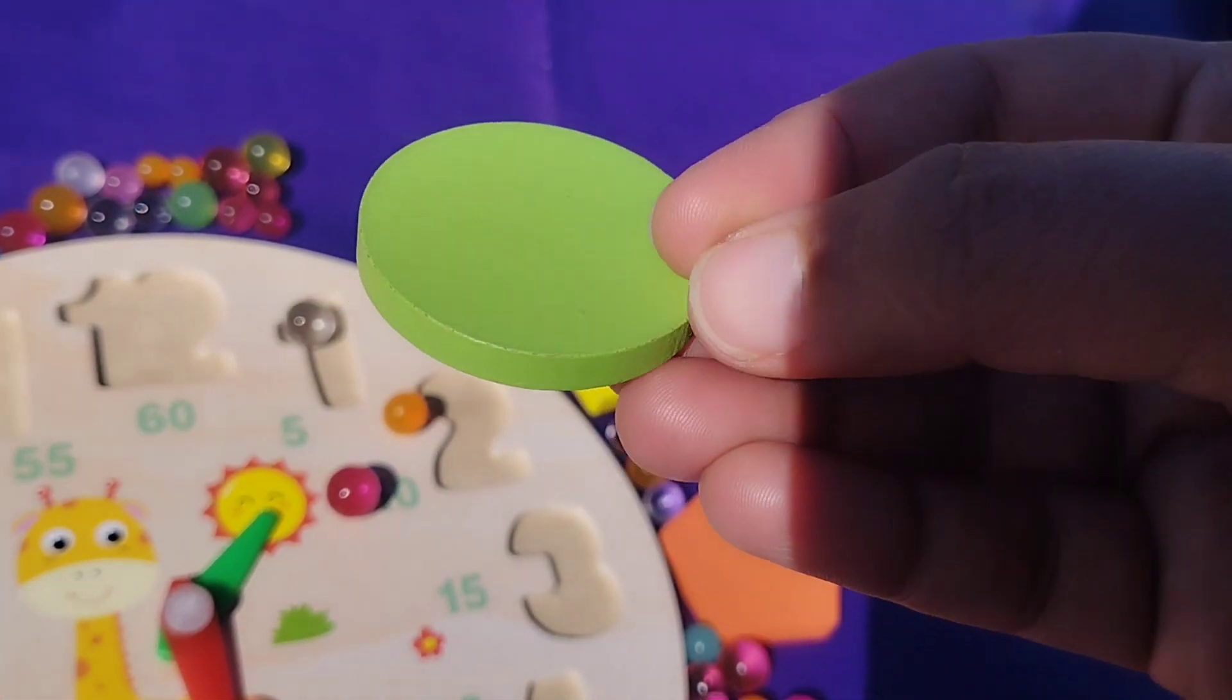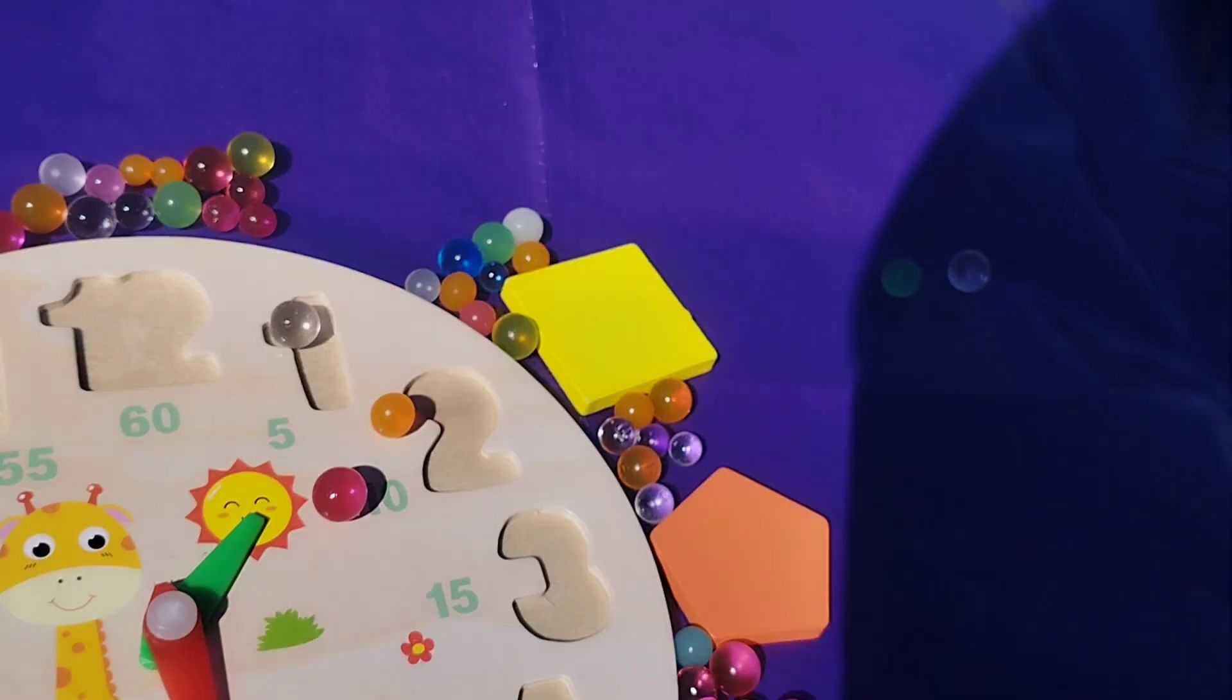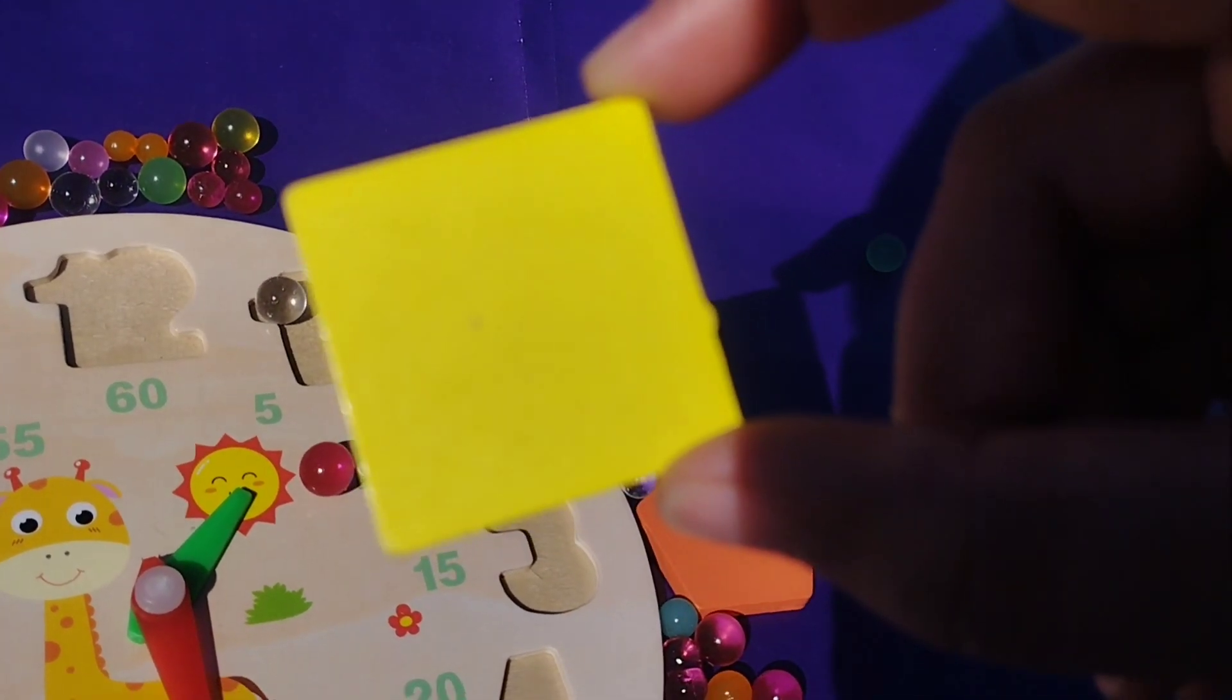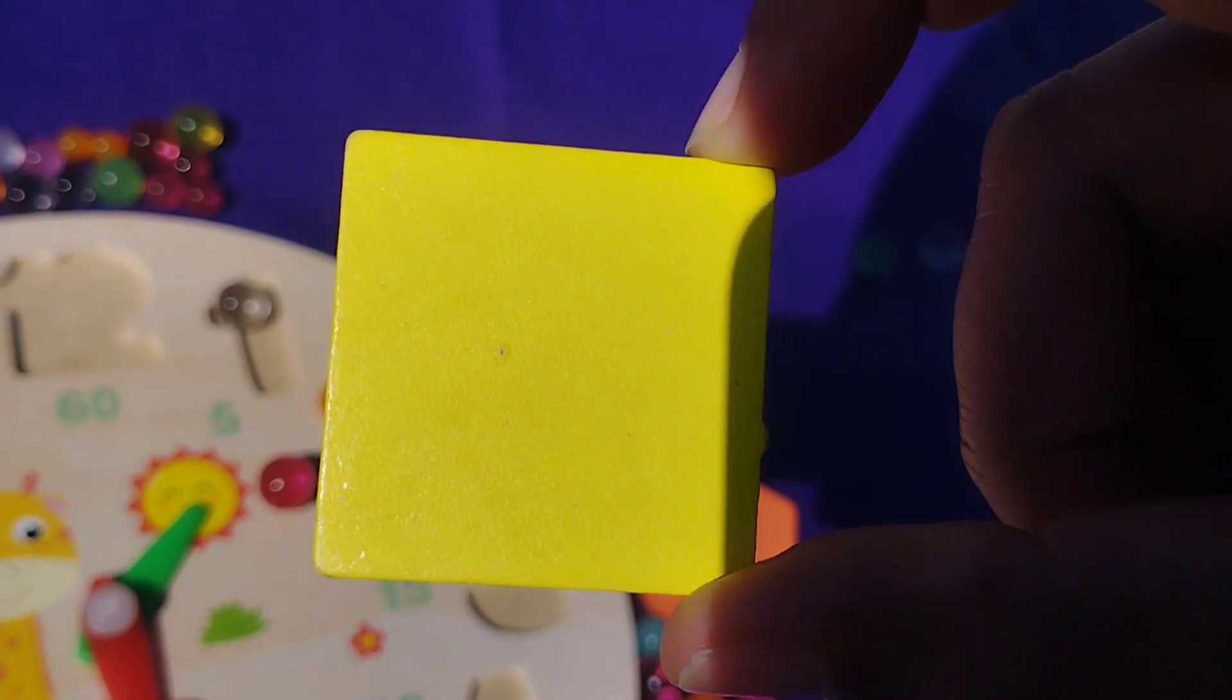Circle. This is circle shape. Square. This is square shape. Square.